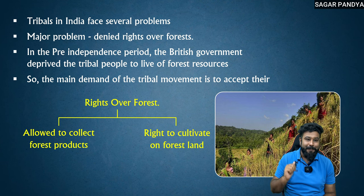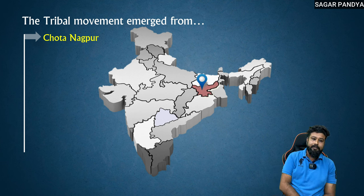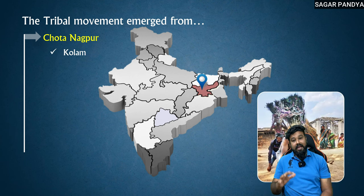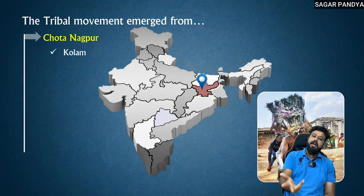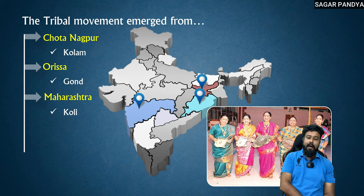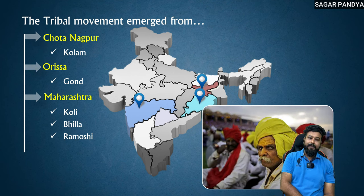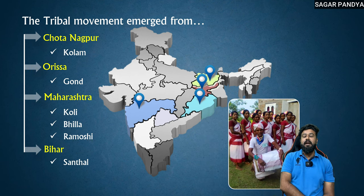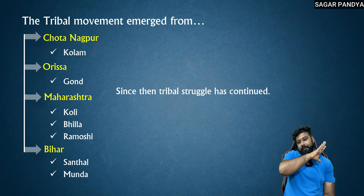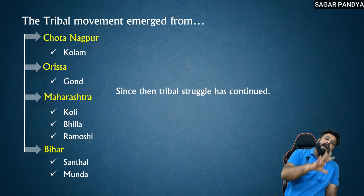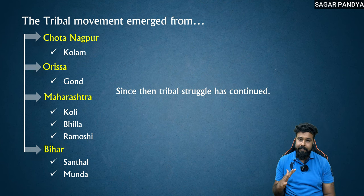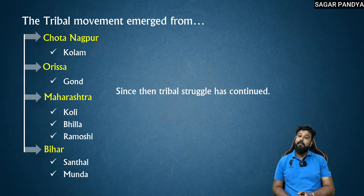This was demanded by the tribals. The tribal movement emerged from Chhota Nagpur. It was done by the Santhal and Munda tribe. Since this tribal struggle was continued, and even today there are many areas of India where tribal rights are not given — rather, tribals themselves don't know what their rights are. So this is tribal rights — tribal movement — and this is an important two-mark answer that can come in the exam.